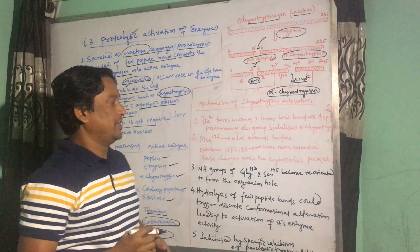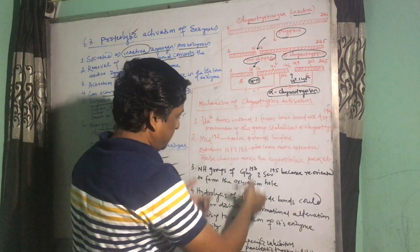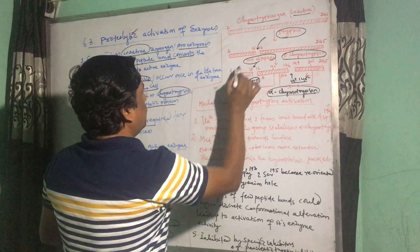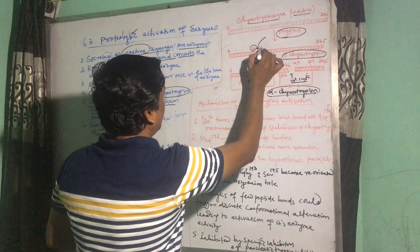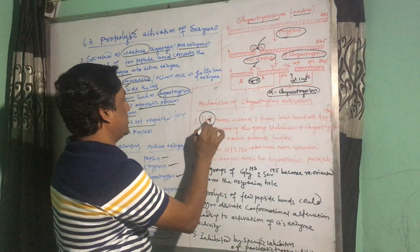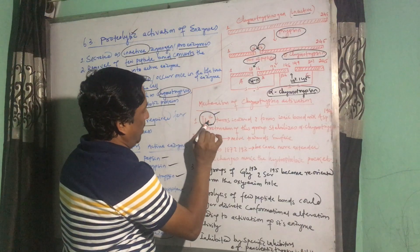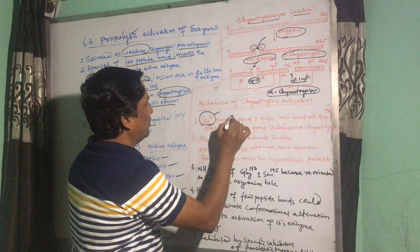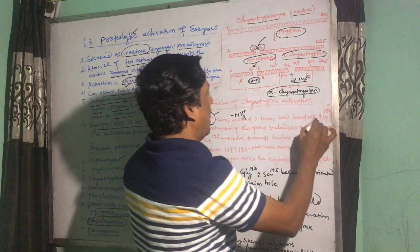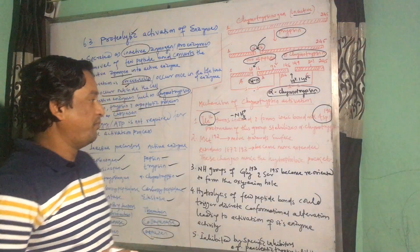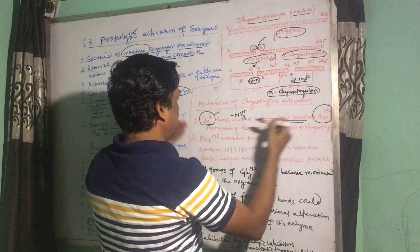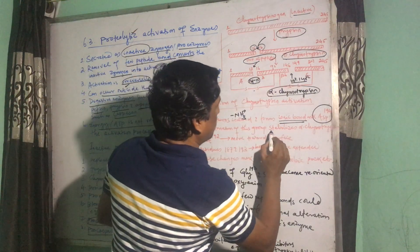Now we will discuss a few important structural changes that happen during this activation. Cleavage of the peptide bond between the 15th and 16th amino acids frees the amino terminal of the 16th amino acid, which is isoleucine. This amino terminal becomes protonated — meaning NH2 becomes NH3+ — and this NH3+ moves inward and interacts with aspartic acid 194 through an ionic bond, making the protein structure stable.